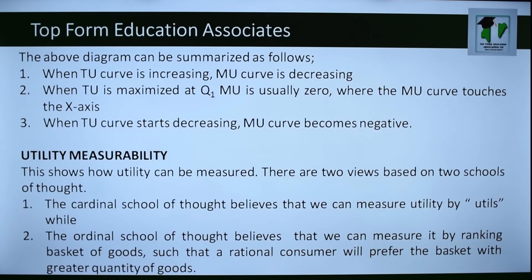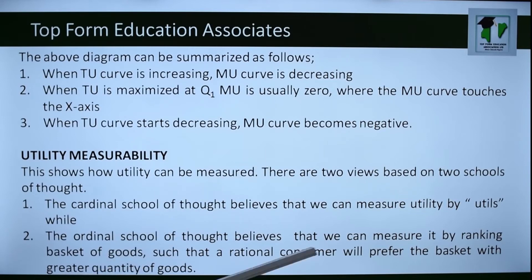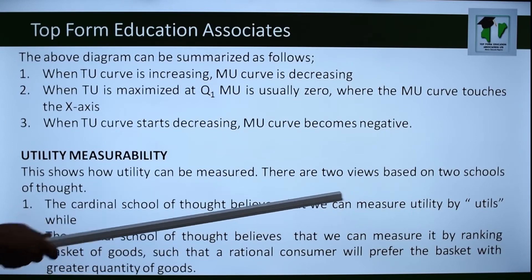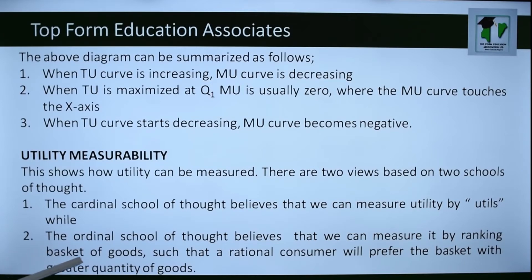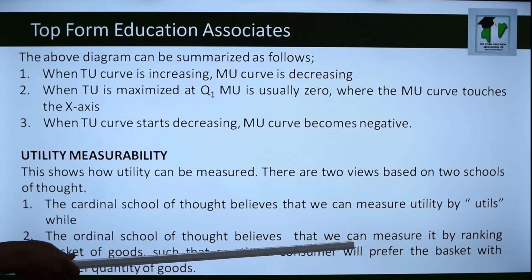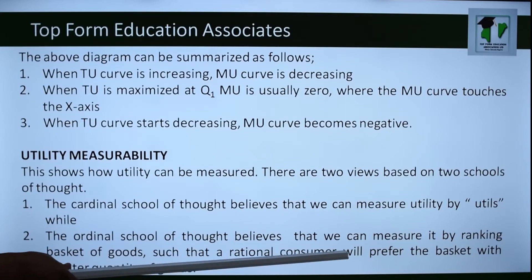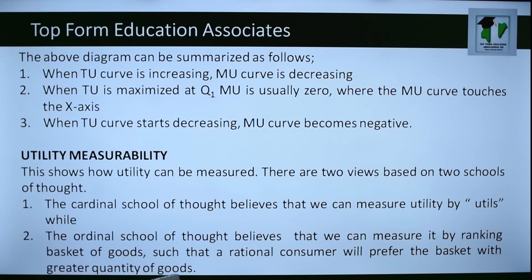Regarding utility measurability: there are two views based on two schools of thought. The cardinal school of thought believes utility can be measured by utils. The ordinal school of thought believes utility can be measured by ranking baskets of goods, so that a rational consumer will prefer the basket with the greater quantity of goods.